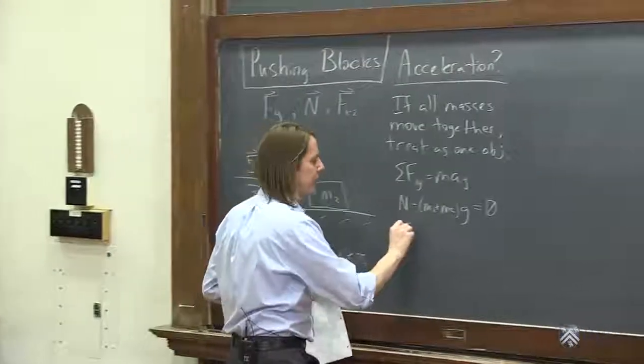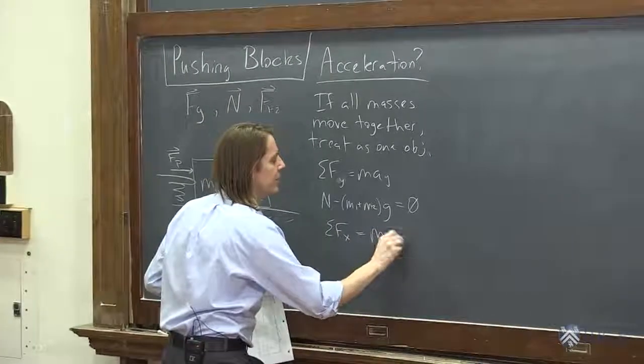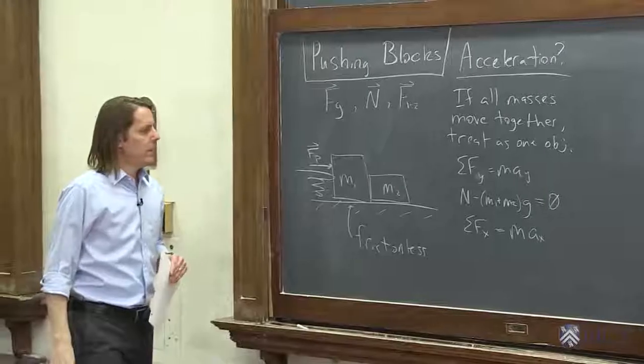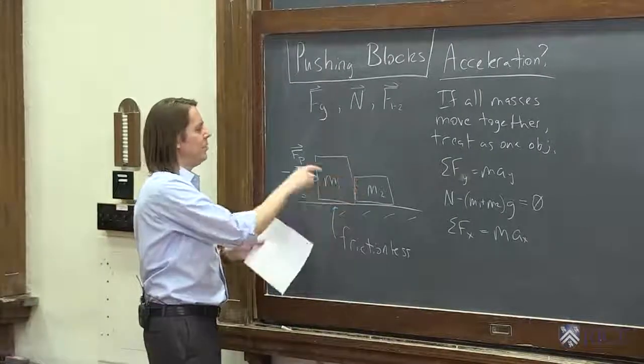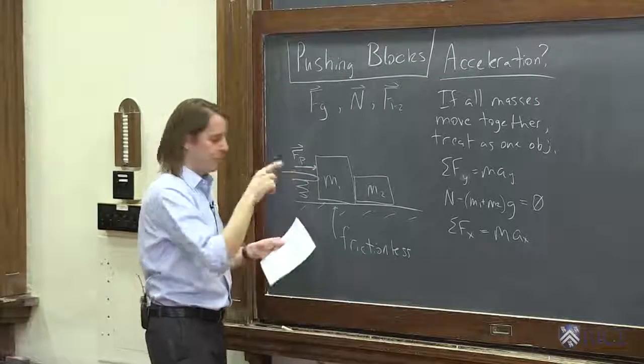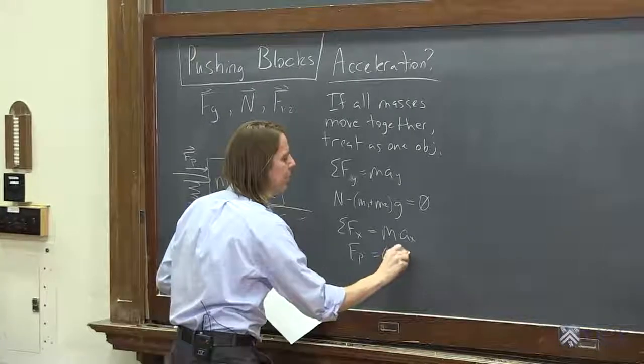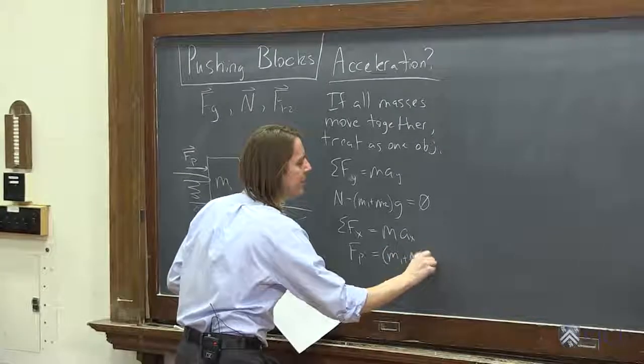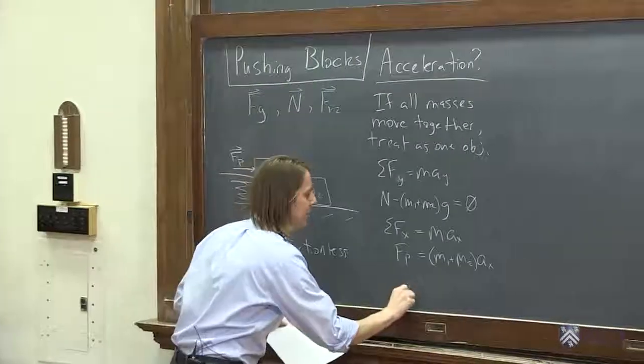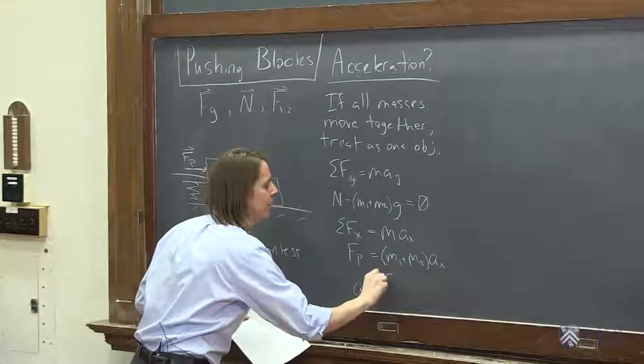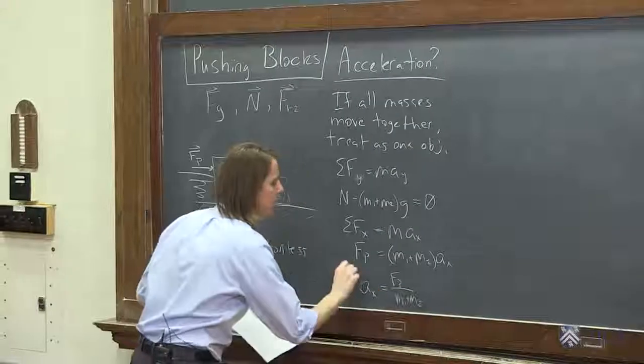We asked for acceleration and we've applied in this direction. How hard does it accelerate that way? So sum of the forces in the x equals the mass times the acceleration in the x. We treat it as one object. The force being applied to this object, the only one in the x is the force of the push, Fp. So the acceleration in the x is simply the push force divided by the total mass, Fp over M1 plus M2.